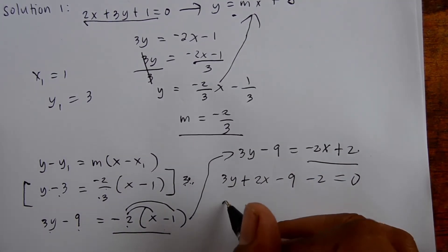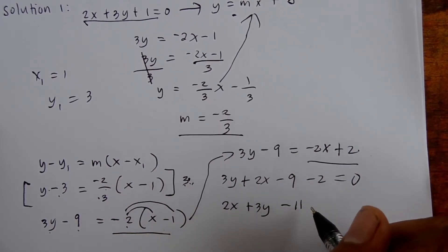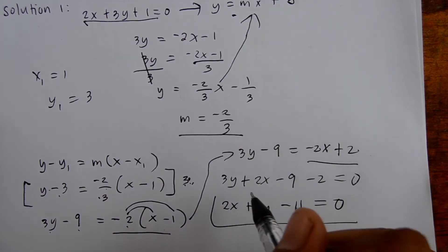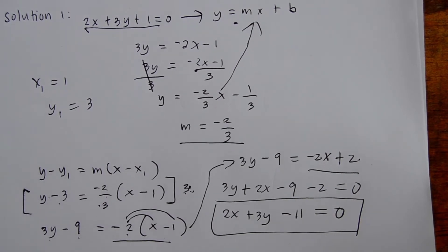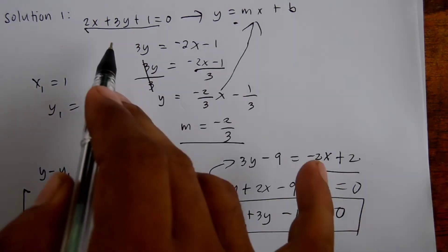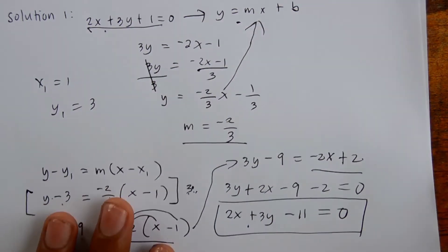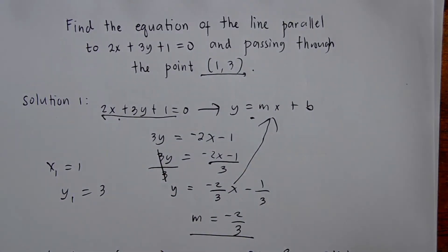Then arrange as 2x plus 3y, and add 9 and 2, that is negative 11 equals 0. So this is our answer: 2x plus 3y minus 11 equals 0. This equation is now parallel to 2x plus 3y plus 1 equals 0, passing through the point (1, 3).